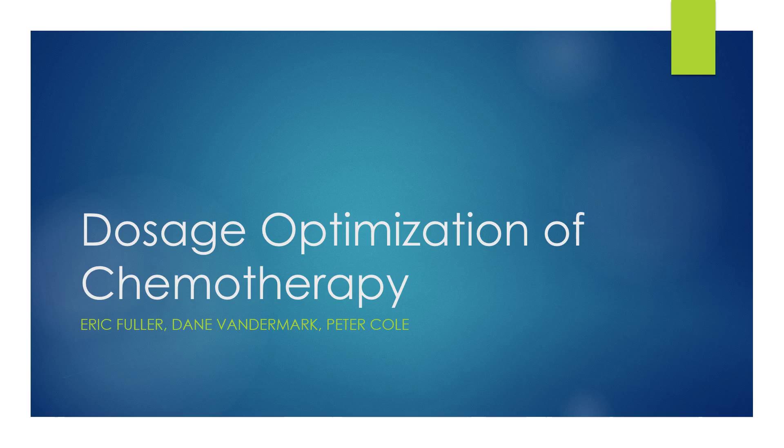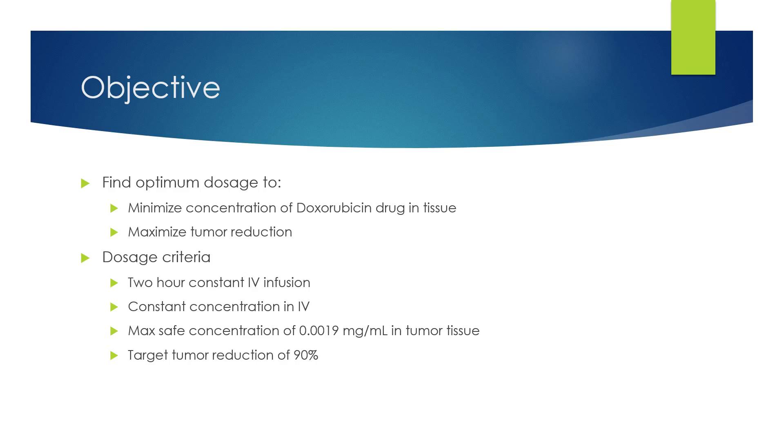There have also been cases where the dosages were too low and the cancer tumors weren't effectively reduced. So our objective today will be to maximize the tumor reduction of the cancer cell to eliminate as much of it as possible, but to minimize the concentration of the doxorubicin drug in the tissue to not do damage to those healthy cells.